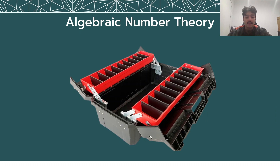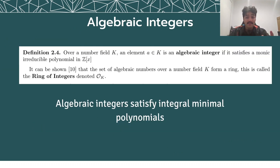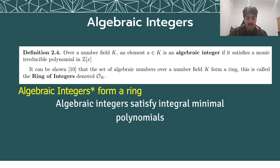To investigate the equivalent conditions of the problem, we open up our toolbox of algebraic number theory, building up fundamental objects and results that allow us to investigate Eisenstein's fourth problem. First, let's look at the ring of integers. Over a number field k, an element alpha in k is an algebraic integer if it satisfies a monic irreducible polynomial in Z[x].